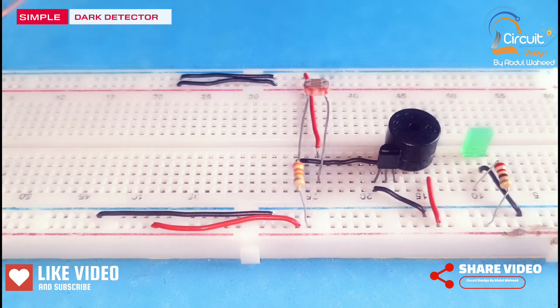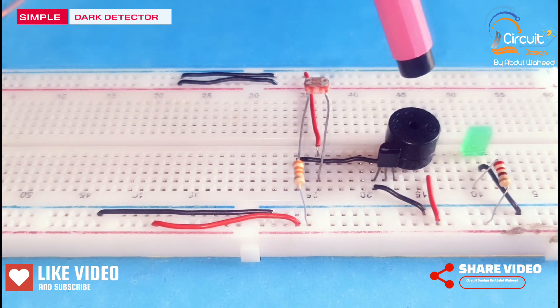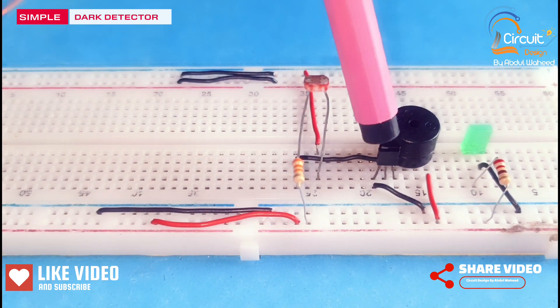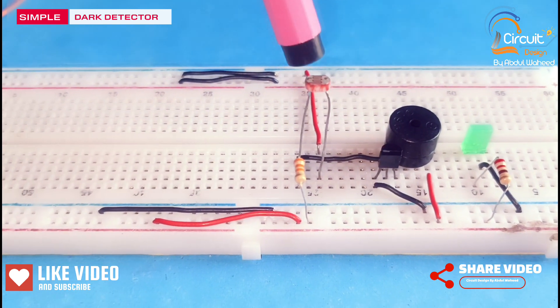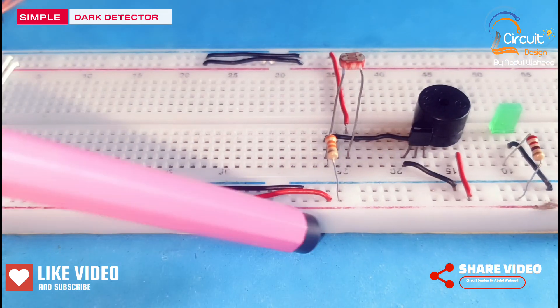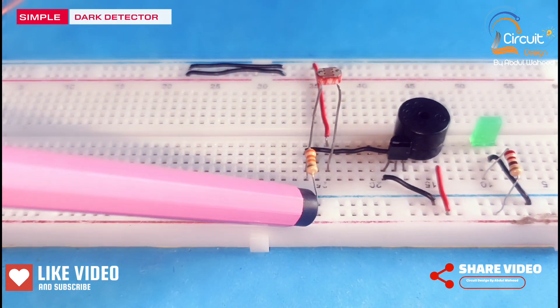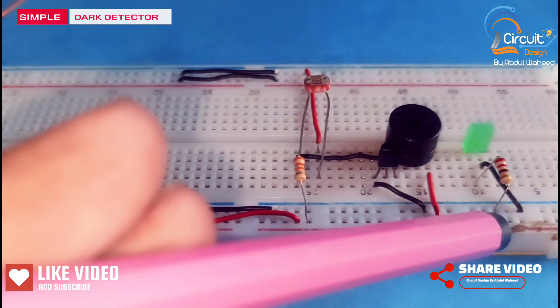In this circuit, I use one LED, a buzzer, a transistor 2N3904, LDR, a resistor of value 33K, and a resistor of value 220 Ohm.